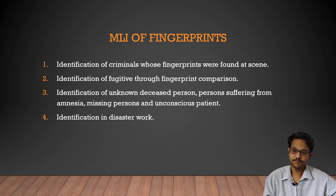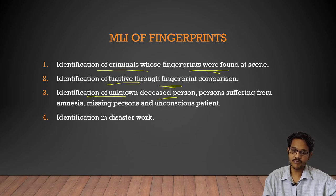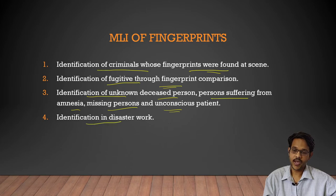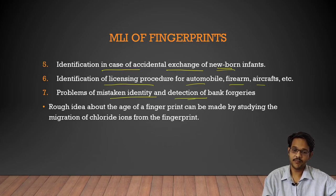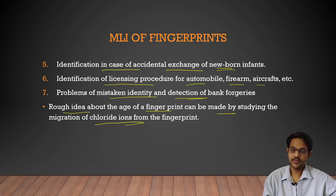The medical importance of fingerprints includes: identification of criminals whose fingerprints were found at a crime scene; identification of fugitives through fingerprint comparison; identification of non-deceased persons, persons with amnesia, missing persons, and casualties; identification in disasters like earthquakes, building collapses, or floods; identification in accidental exchange of newborn infants; licensing for automobiles, firearms, and aircraft; resolving mistaken identity and detecting bank frauds. Additionally, a rough idea of the age of fingerprints can be estimated by studying the migration of chloride ions.